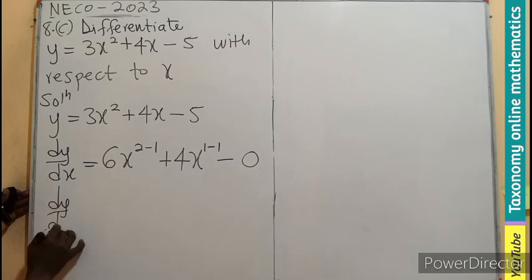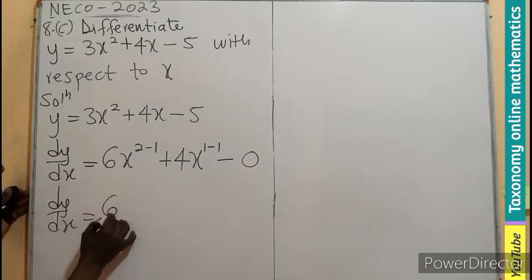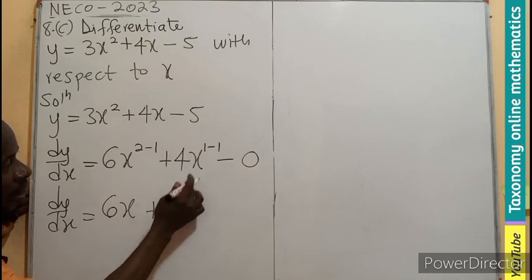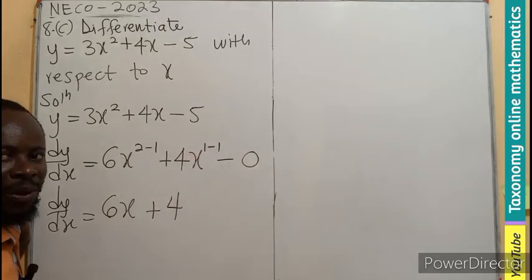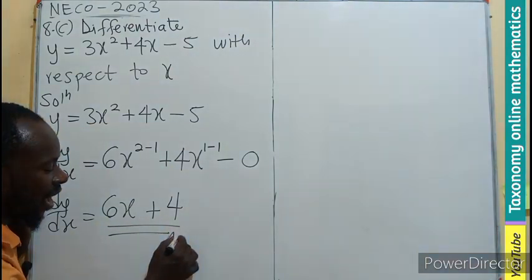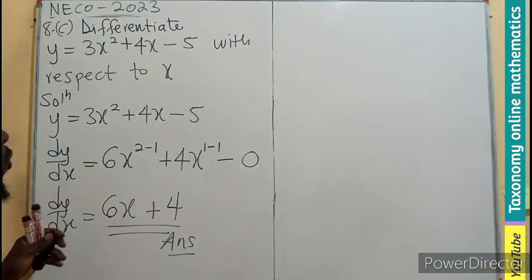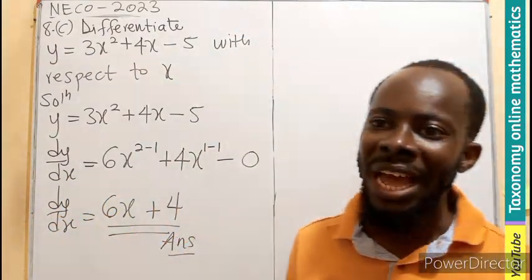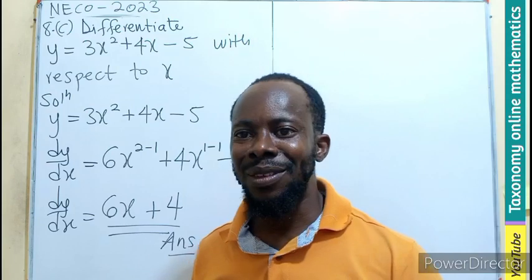So our dy dx will be equal to 6x exponent 1, 4x exponent 0, and exponent 0 is 1. So this is what we have as a simple differentiation of y equals 3x squared plus 4x minus 5 with respect to x.